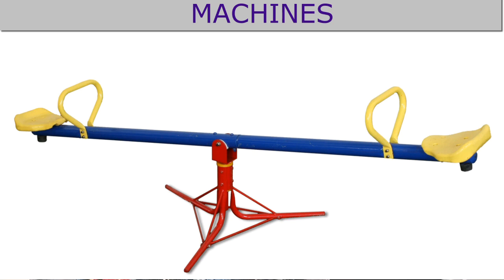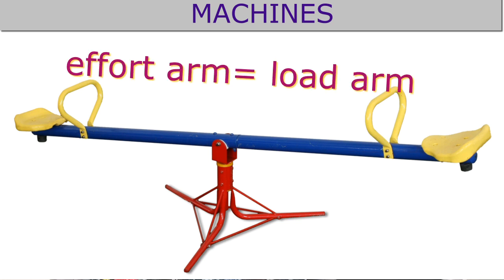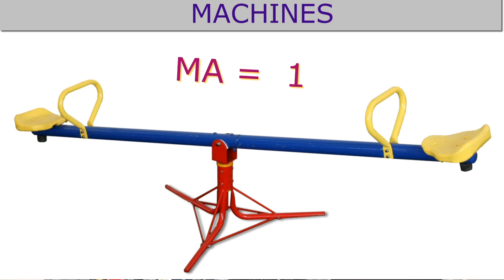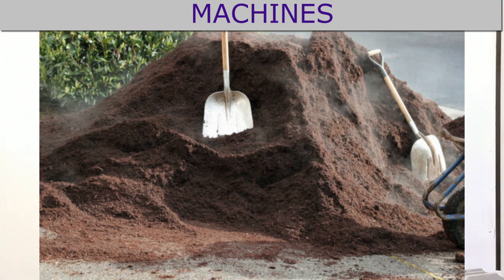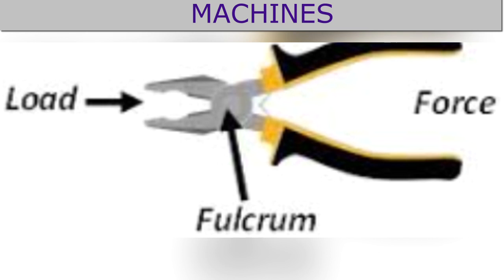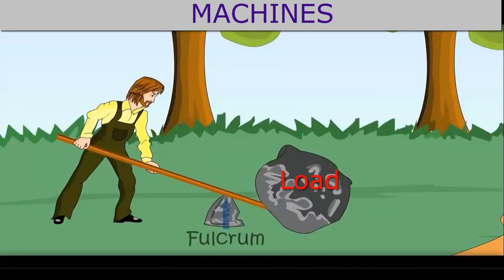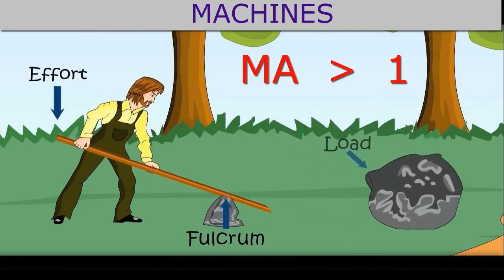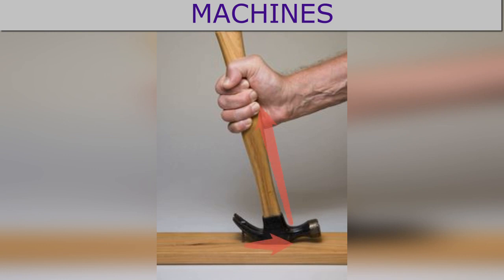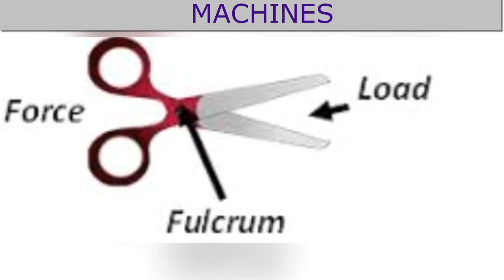In the case of scissors, the fulcrum is almost in the middle, so the effort arm equals the load arm, giving mechanical advantage equal to 1. In this case, the lever is used to change the direction of effort. But in the case of metal cutters, pliers, or a spade to turn the soil, the handle (effort arm) is longer than the blade (load arm), so mechanical advantage is greater than 1 and these machines act as force multipliers. Crowbar and claw hammer are also class 1 levers and force multipliers.